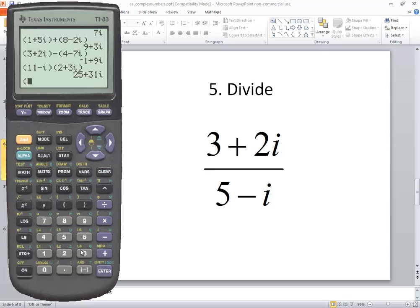So do beginning parentheses, three plus two, second decimal for the i, closing parentheses, divided by beginning parentheses, five minus, second decimal, and then closing parentheses, and then press enter.